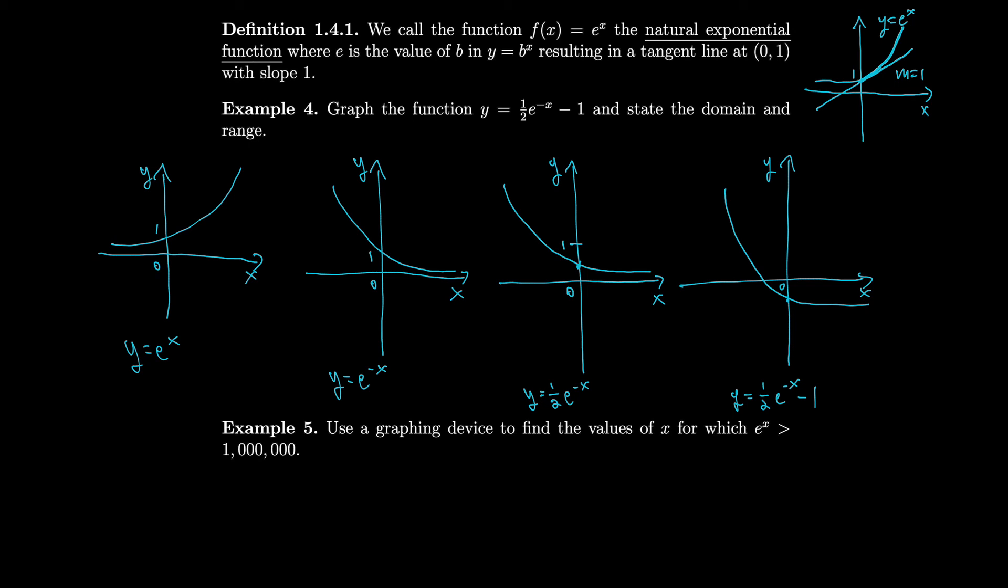And in order to figure out the domain and range, we should figure out what numbers it can't get past. Originally, it couldn't get past this x-axis, which was the same for e to the minus x. Then, it ended up still being the same for half e to the minus x. It doesn't change where it can't get past. But when we move it down one, that moves that line down one. So, now instead of it being the x-axis at y equals zero, it's this line at y equals minus one. So, our domain as usual for most of our exponential functions is all real numbers. Because we can plug in any x value we want. But our range stops at minus one. So, it's only the numbers from minus one to infinity.